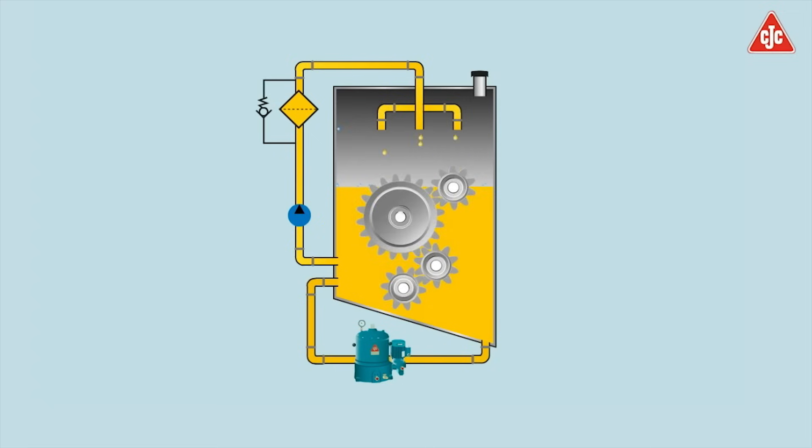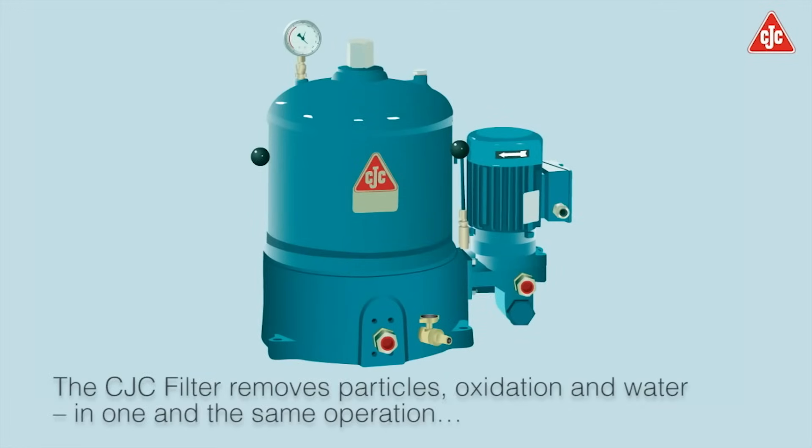The clean and dry oil is returned to the system and contamination will now be removed continuously. The CJC filter removes particles, oxidation and water in one and the same operation.